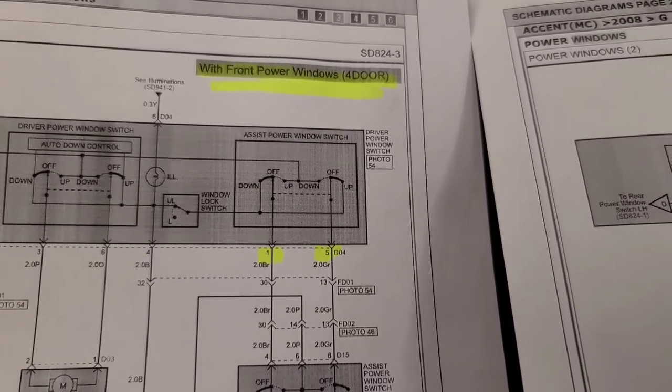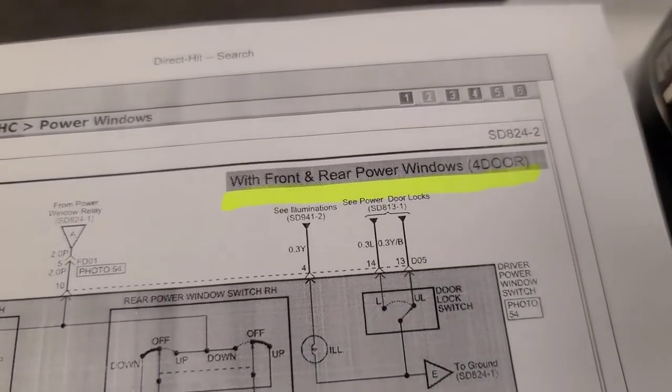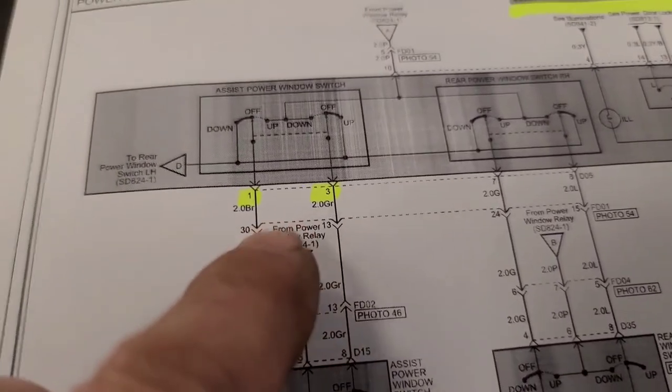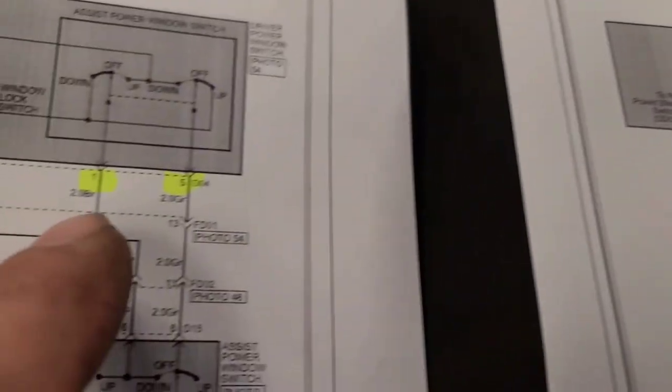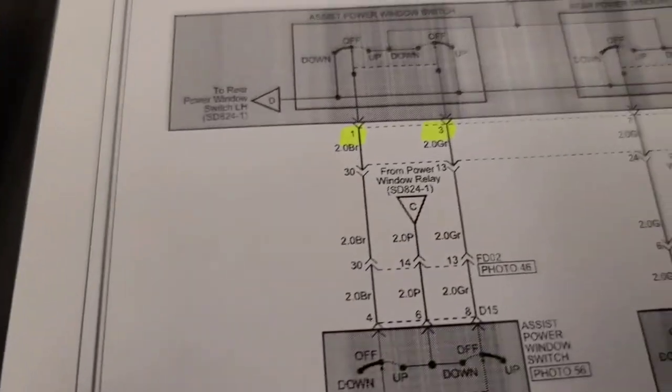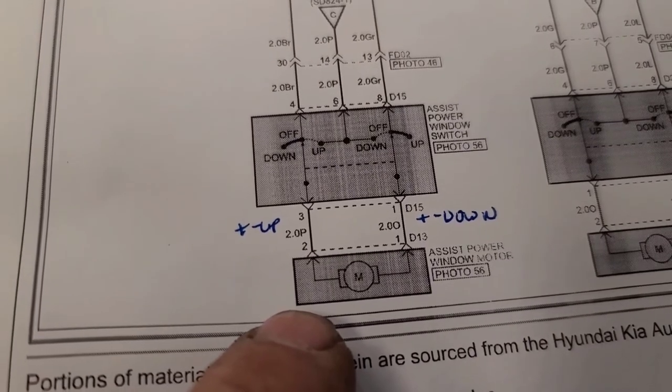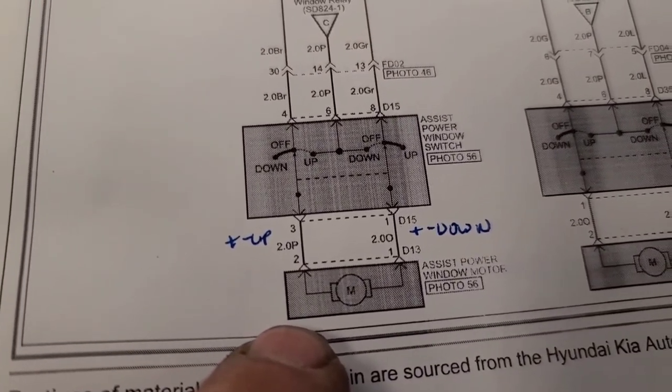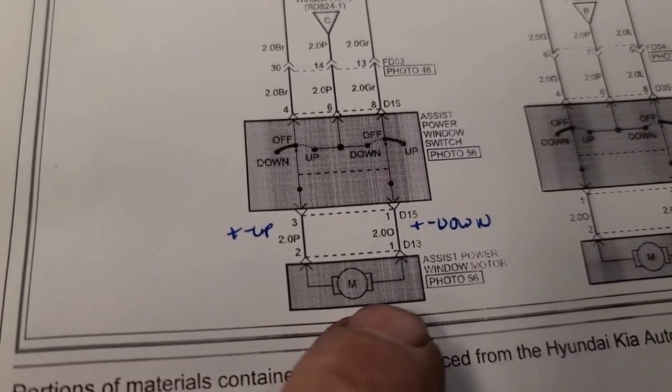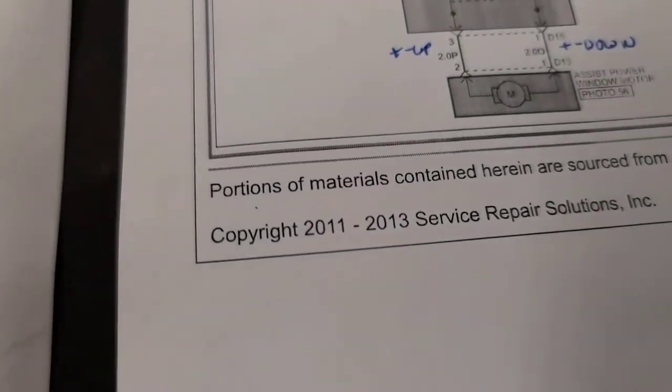It turns out there are a couple of versions of the schematic. This is the one I was looking at, and it says with front power windows, four door. But then there's with front and rear power windows, four door. The difference is at this switch, it's pin one and three, and at the master switch, it's pin one and five. The gray wire was in the wrong location, but it's still the same circuit. The switch is pink is up, pink is power up, and orange is power down. Both of these are drawn incorrectly. They're actually opposite that. But, regardless, we need a master switch.